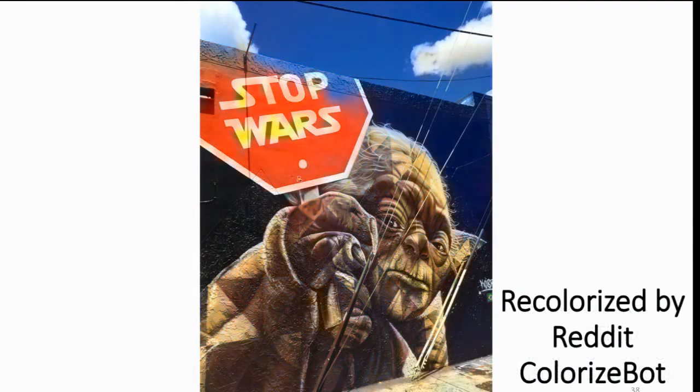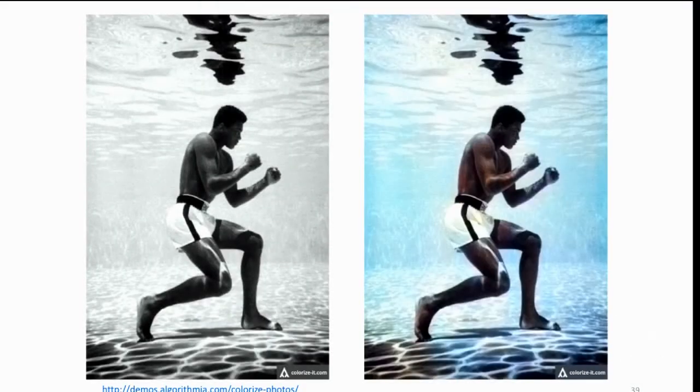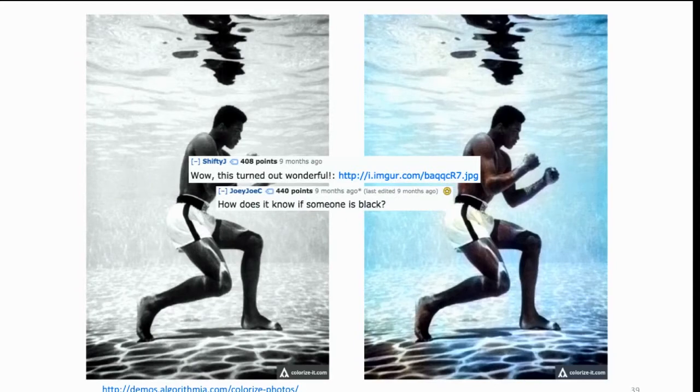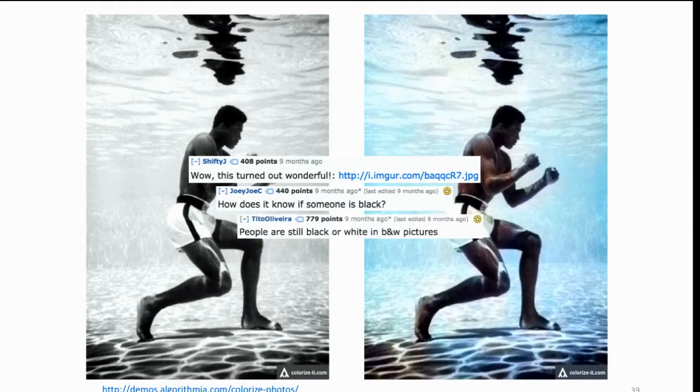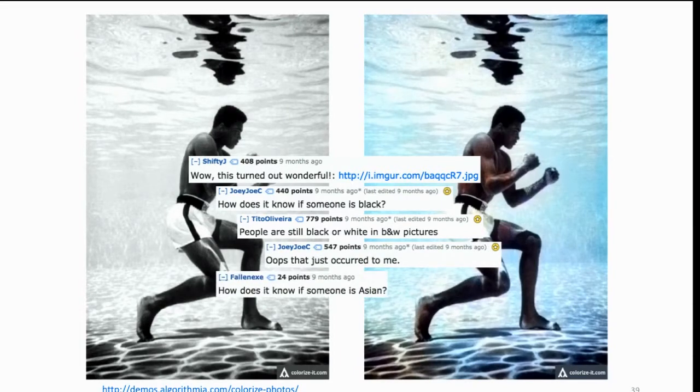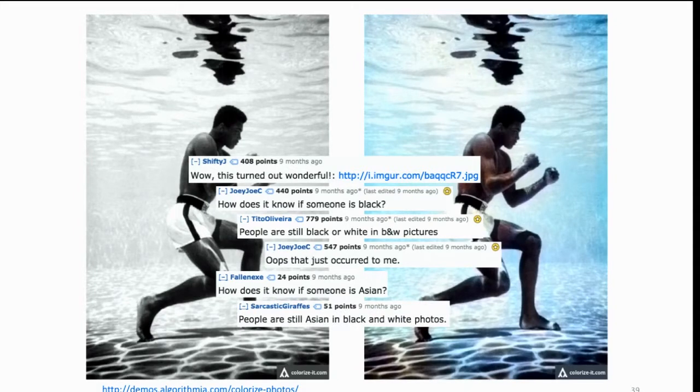If we have colorfully tiled Yoda, we can also make him kind of green. We've also seen some fun message board exchanges. Here's an example of Muhammad Ali. Someone got excited and said, wow, this turned out really well. Someone asked the scientific question of how does the system know what race he is? It turns out what we call race is actually not in the chroma channels, but mostly in the lightness channel. So people are still black or white in black and white pictures. That's kind of an interesting scientific point.